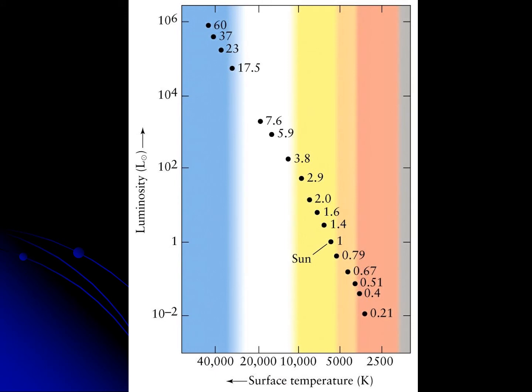One interesting thing. On the HR diagram, remember, the main sequence runs diagonally. If we graph absolute magnitude or luminosity here, and temperature, or B minus V, or spectral type here, you get something that looks like this, diagonal. Well, this is more luminous, therefore more mass. And so what that means is, on your HR diagram, you have more mass up and to the left.